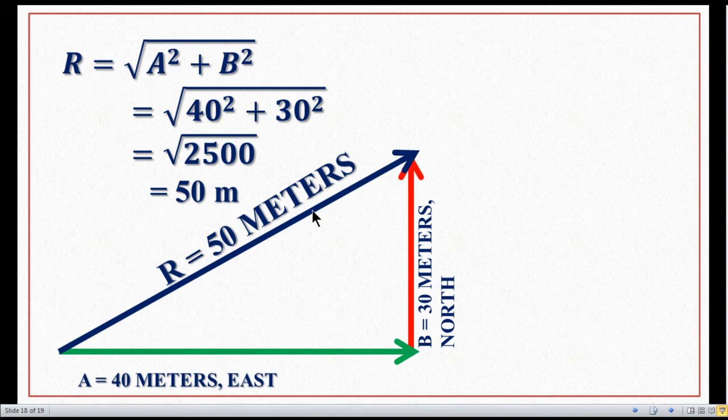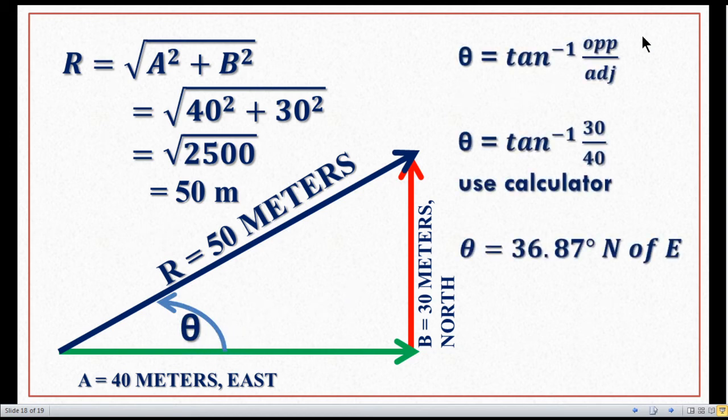Now we can find out the vector angle. Theta is the vector angle. Theta equals tan inverse of opposite side divided by adjacent side. Adjacent side is 40 meters and opposite side is 30 meters.